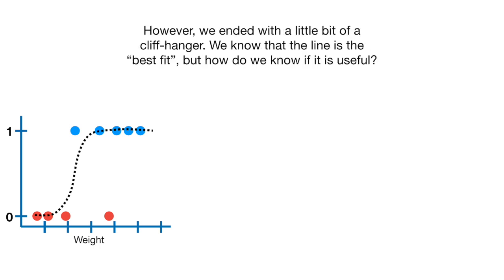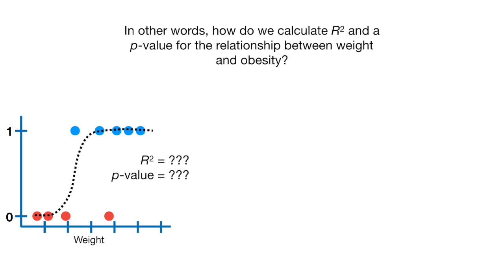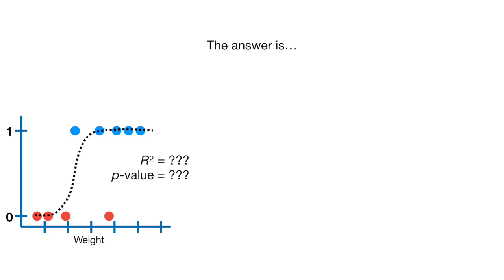However, we ended with a bit of a cliffhanger. We know that the line is best fit, but how do we know if it is useful? In other words, how do we calculate R squared and a p-value for the relationship between weight and obesity? The answer is, it's complicated.